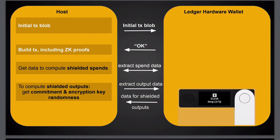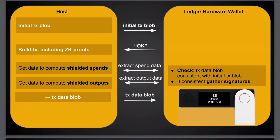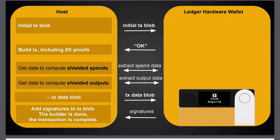For shielded outputs, the Ledger provides randomness for commitments and the randomness used to generate the encryption key — again allowing the hardware wallet to recompute values from flash-stored information and verify the host's work. Once the host has all this information, it computes the final shielded transaction and sends it back to the Ledger, which recomputes values to check consistency with the initial transaction data. If everything matches, it gathers the required signatures and sends them back to the host to be submitted on-chain.